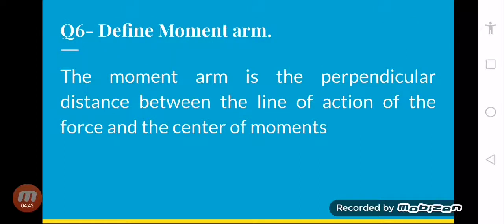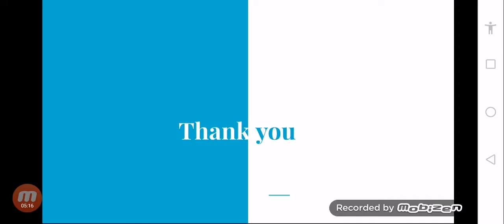Question number six is, define moment arm. The moment arm is the perpendicular distance between the line of action of force and the center of moments. Humne torque mein yeh padha hai — moment arm ka perpendicular distance. Line of action jahan woh point hai jahan pe force act kari hai, aur woh point jis point ke gird woh puri body move kari hai — uska axis of rotation — un dono ke darmiyaan ka jo distance hai, woh hamare paas moment arm hota hai. Thank you students.